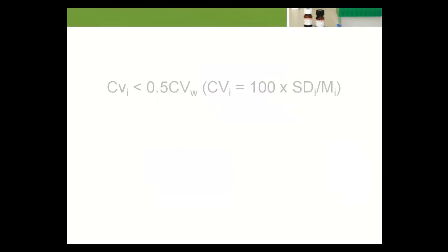If there is no bias between analytical modules, all modules have the same mean, and each module just meets the goal of CVI less than 0.5 CVW, CVI equals 100 times SDI over MI, then the total analytical system will also just meet the goal.